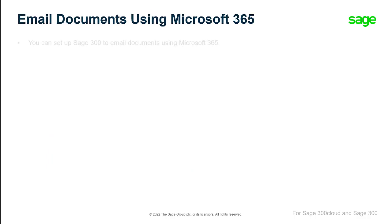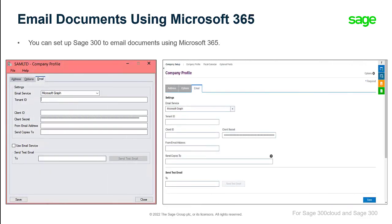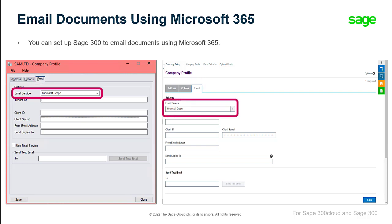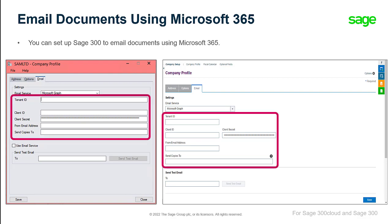You can now set up Sage 300 to email documents using Microsoft 365 for both desktop screens and web screens. To do so, on the Email tab of the Company Profile screen, select Microsoft Graph in the Email Service field. Then, to set up Sage 300 to email documents, you will need to enter settings for the email service, such as the tenant ID, client ID, and client secret.